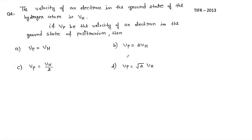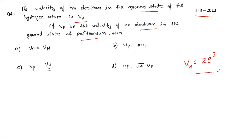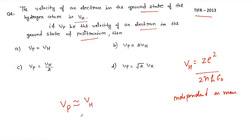Numerical 4 (TIFR 2013): Find the velocity of an electron in the positronium atom. The velocity formula is v = Ze²/(2Nℏε₀), which is independent of mass. Therefore the velocity of the electron in positronium is the same as that in hydrogen for the same orbital. The correct option is A.